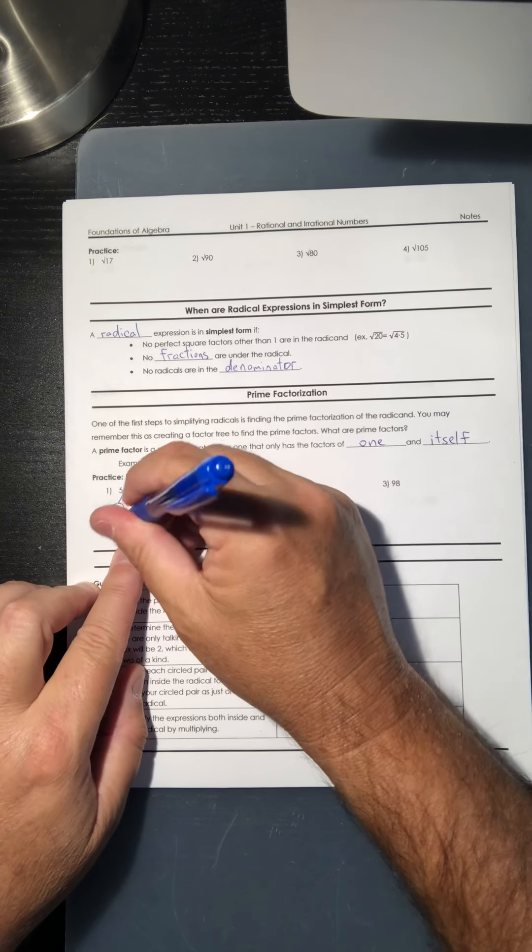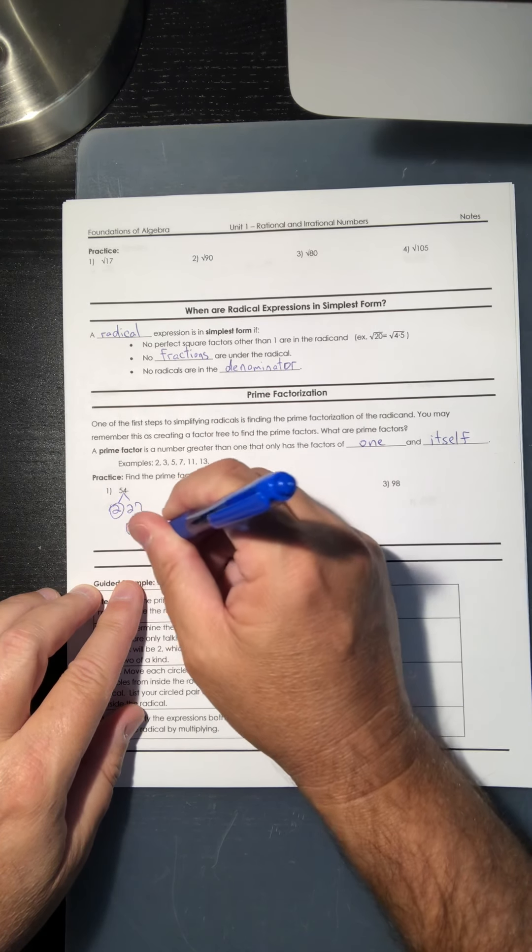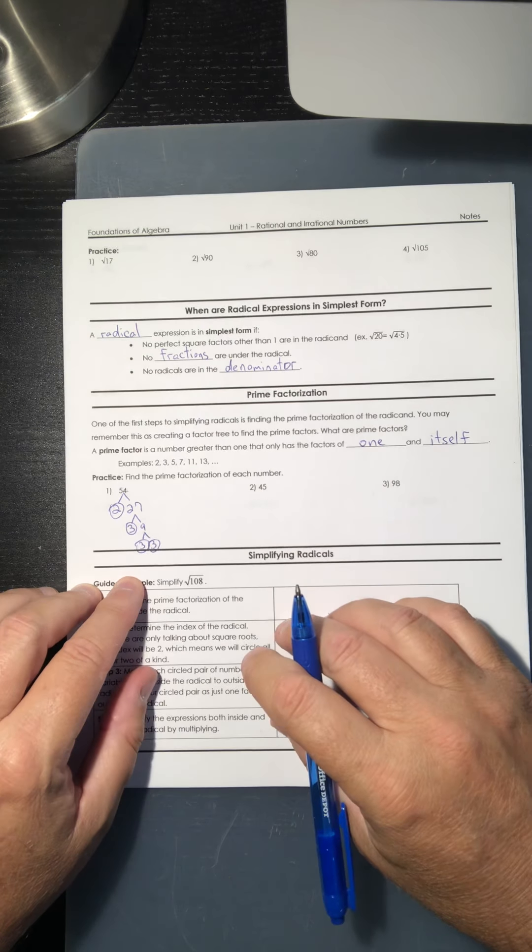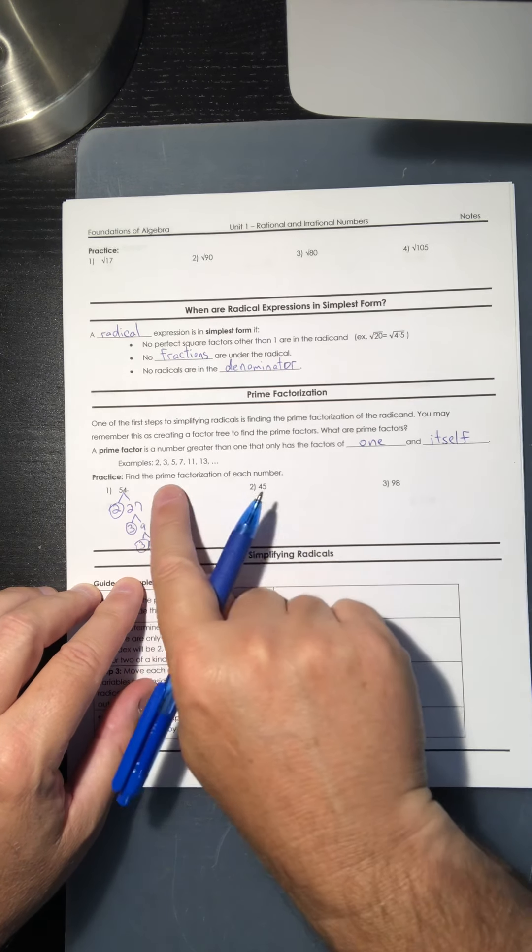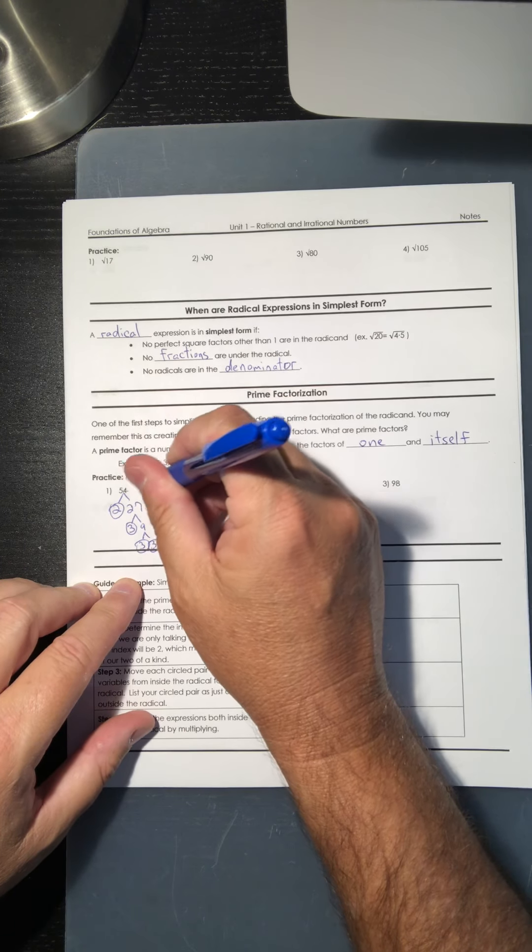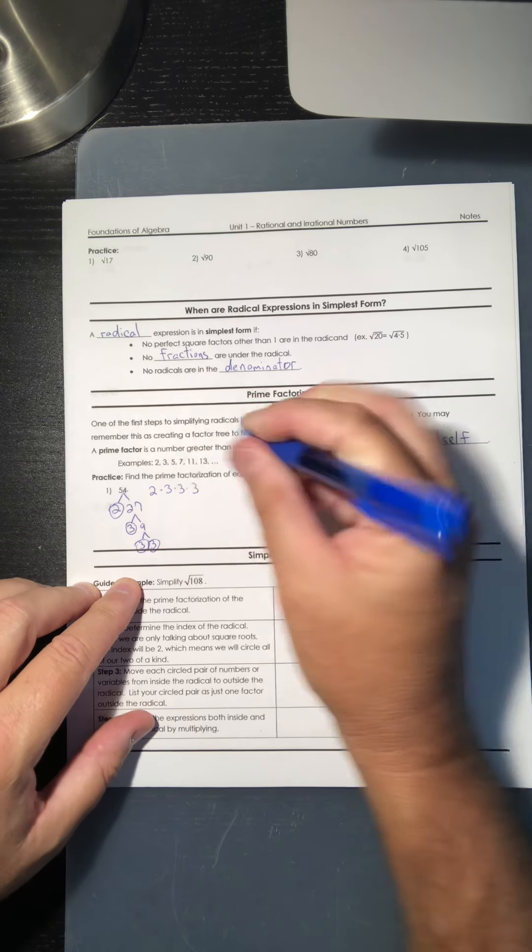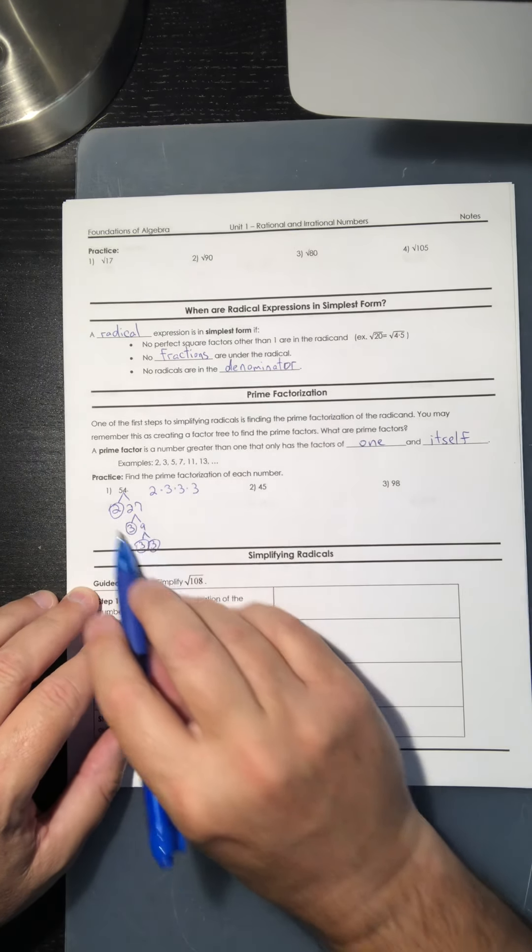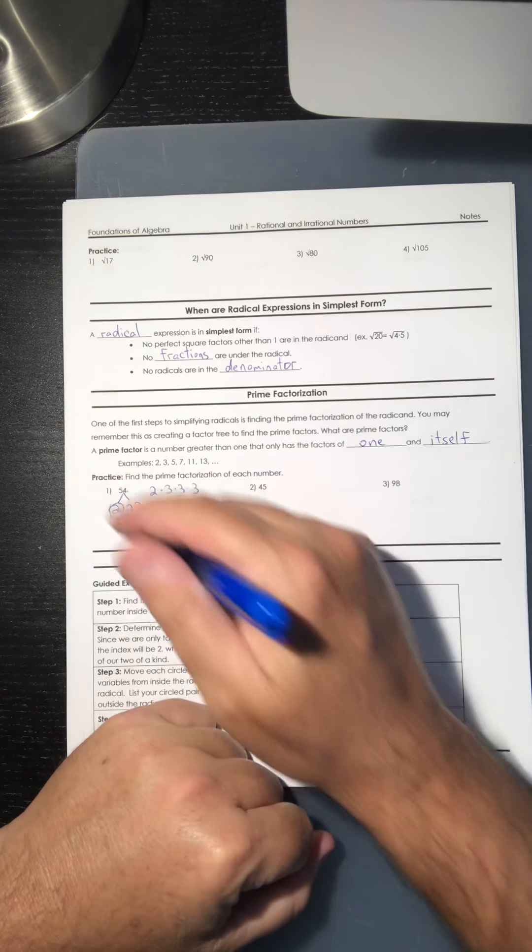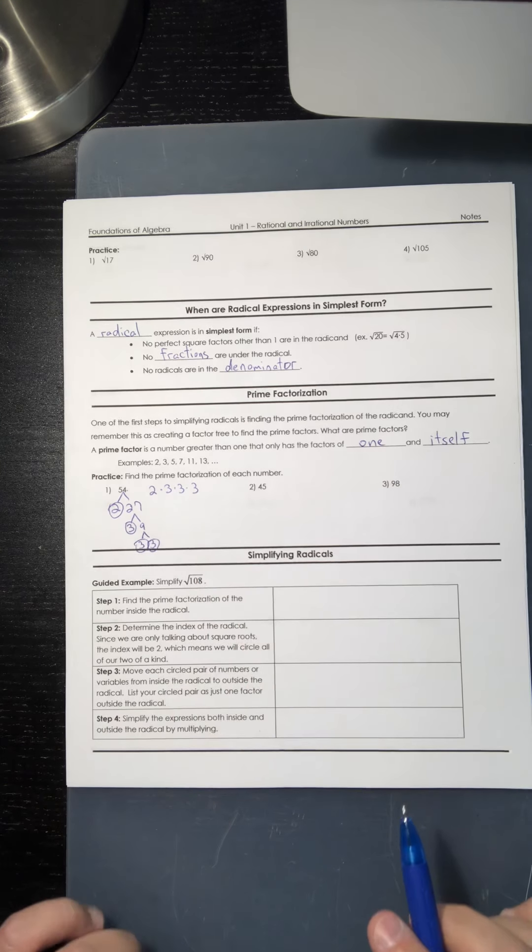And 3 goes into 27 nine times. 3 is a prime number, so we're going to circle that one. But there's a number that goes into 9, and it is 3 again. So 3 times 3. So now let's write the prime factorization of 54. It is going to be 2 times 3 times 3 times 3. So I got these numbers by the numbers that I have circled down at the bottom, at the bottom of each branch.